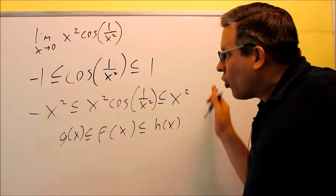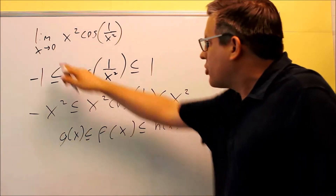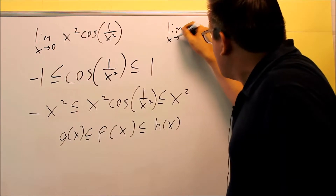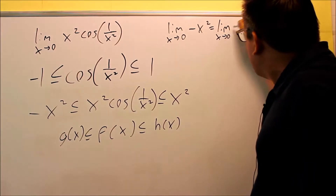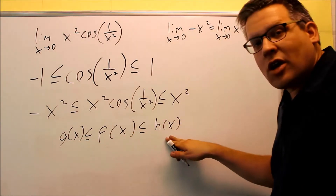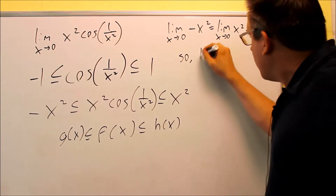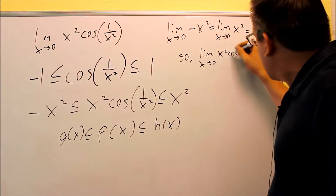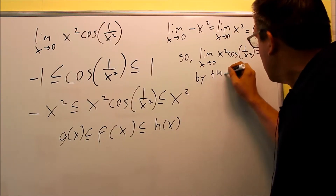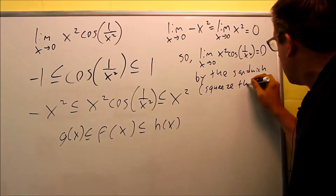When we apply the sandwich theorem, g is negative x squared and h is x squared. We want the limit as x approaches zero of both. The limit as x approaches zero of negative x squared equals the limit as x approaches zero of positive x squared — plugging in zero gives zero for both. So the limit of g of x and h of x are both going to zero. Because of that, the limit as x approaches zero of x squared cosine(1/x²) is also going to equal zero, by the sandwich or squeeze theorem.